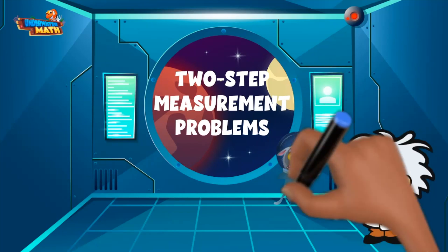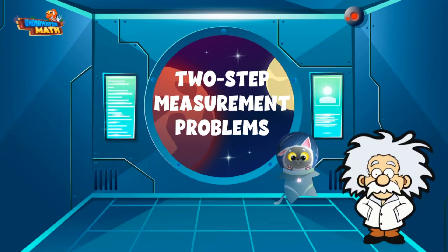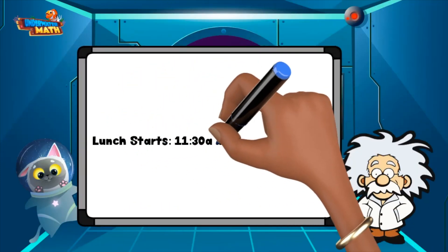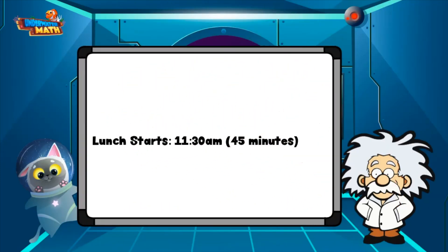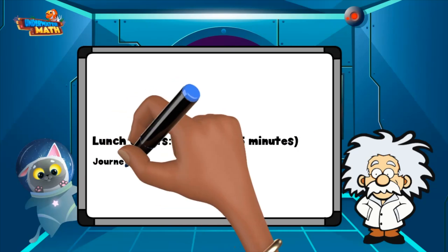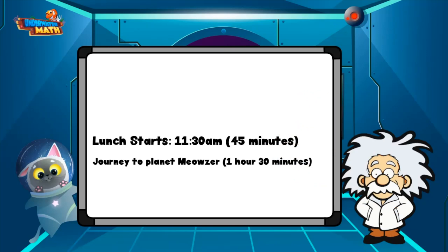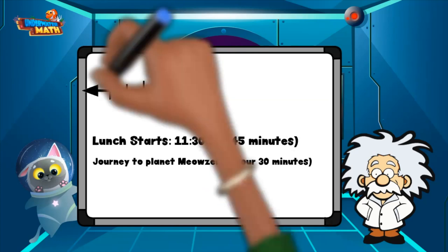Space cat is being blasted away to the planet Mauser and we have some problems to solve. First, space cat needs to eat lunch at 11:30. He has 45 minutes to eat lunch and then an hour and 30 minute journey out to planet Mauser. We need to determine what time it will be when he lands on his new planet.